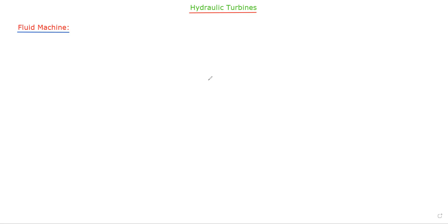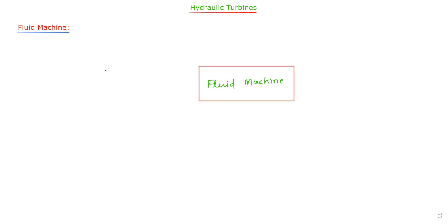From this subject, one of the very important topics is hydraulic turbine. So before talking about hydraulic turbines, we must have a clear knowledge about fluid machines. A fluid machine is a system that can convert stored energy in fluid to mechanical energy. It also converts mechanical energy into stored energy in fluid.